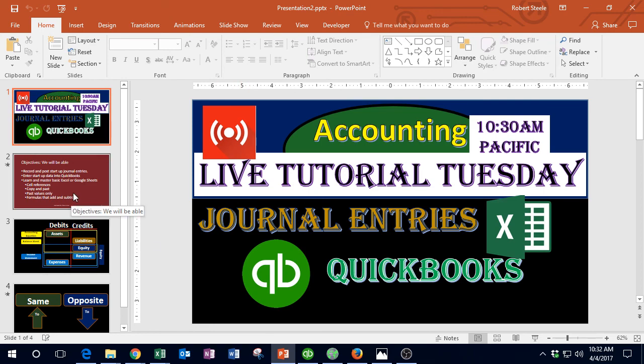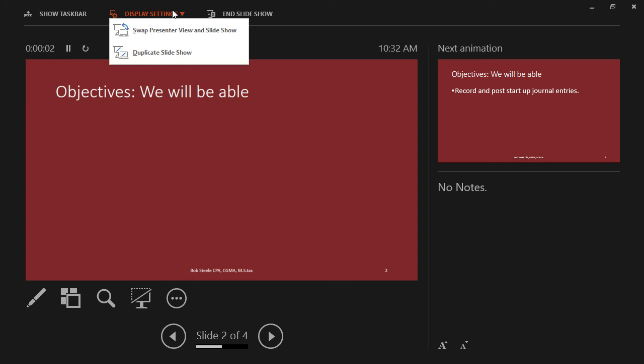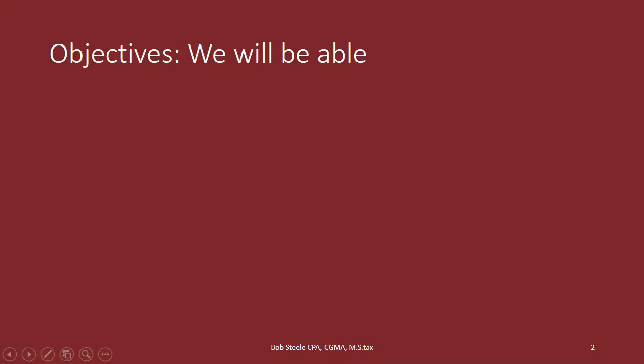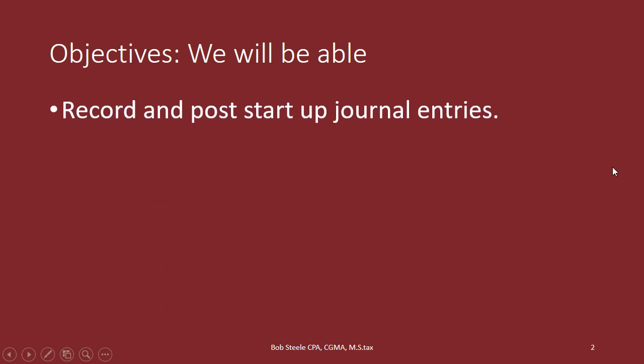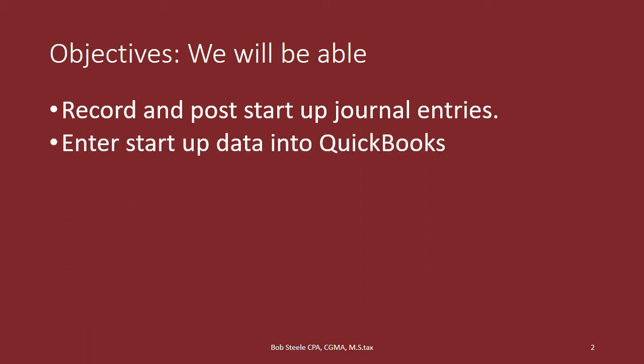Our objectives: we're going to record and post the startup journal entries — the standard transactions from month to month, like paying the utility bill and payroll. Then we'll enter startup data into QuickBooks. Excel is essentially doing it by hand — the theory of debits and credits — and then we'll put the same information into QuickBooks, using the check register as much as possible.